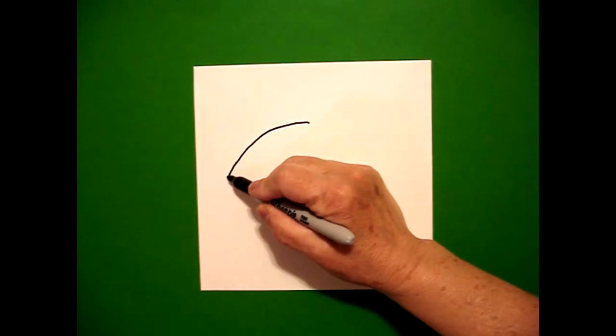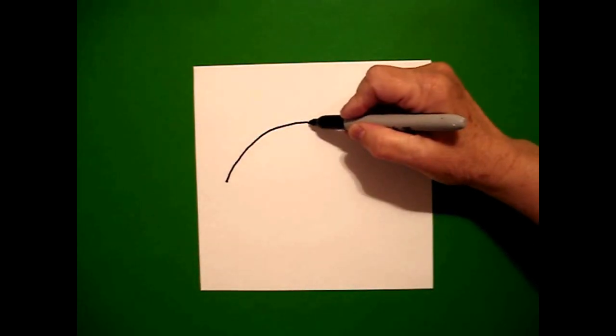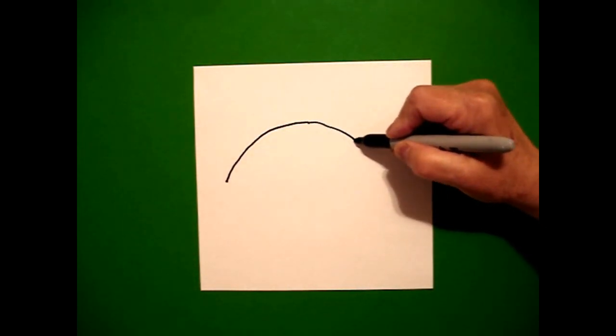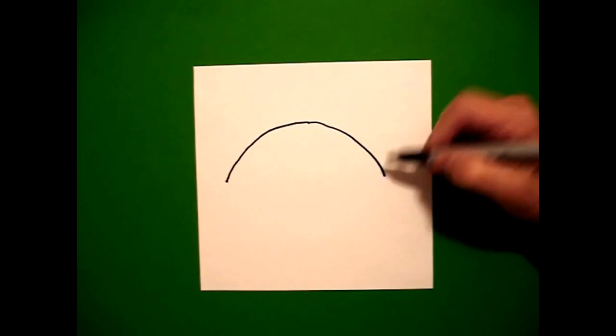I'm going to draw a curved line down, come back to the dot, draw a curved line down on the right.